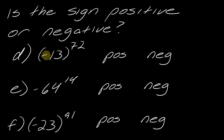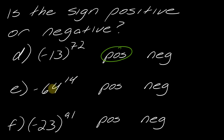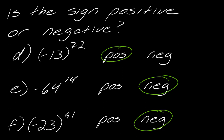For the next set: first one has a negative and an even exponent in parentheses, so this will end up being positive. The next one doesn't have parentheses, so it's just automatically going to be negative. For the last one, we've got parentheses, a negative base, and an odd exponent, so this guarantees the result will be negative. Hopefully that helps you think through it.